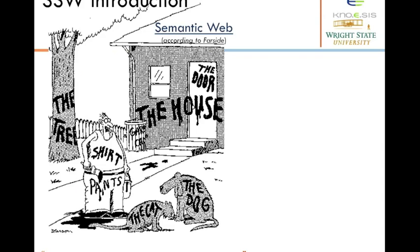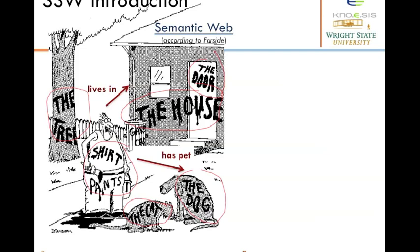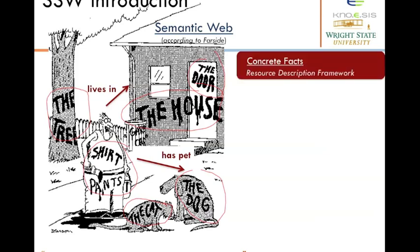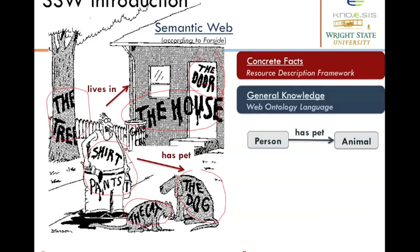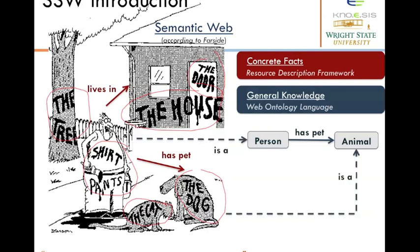Let's look at what semantic web is. There are two important parts: the first is concrete facts, represented using the Resource Description Framework (RDF). The second is the schema component, where the Web Ontology Language (OWL) is used to represent general knowledge. For example, we abstract from instances — a gentleman and a dog — to a conceptualization where we have Person, has-pet, Animal. Person and Animal are concepts, has-pet is the relationship, and instances are related to concepts through these relationships.